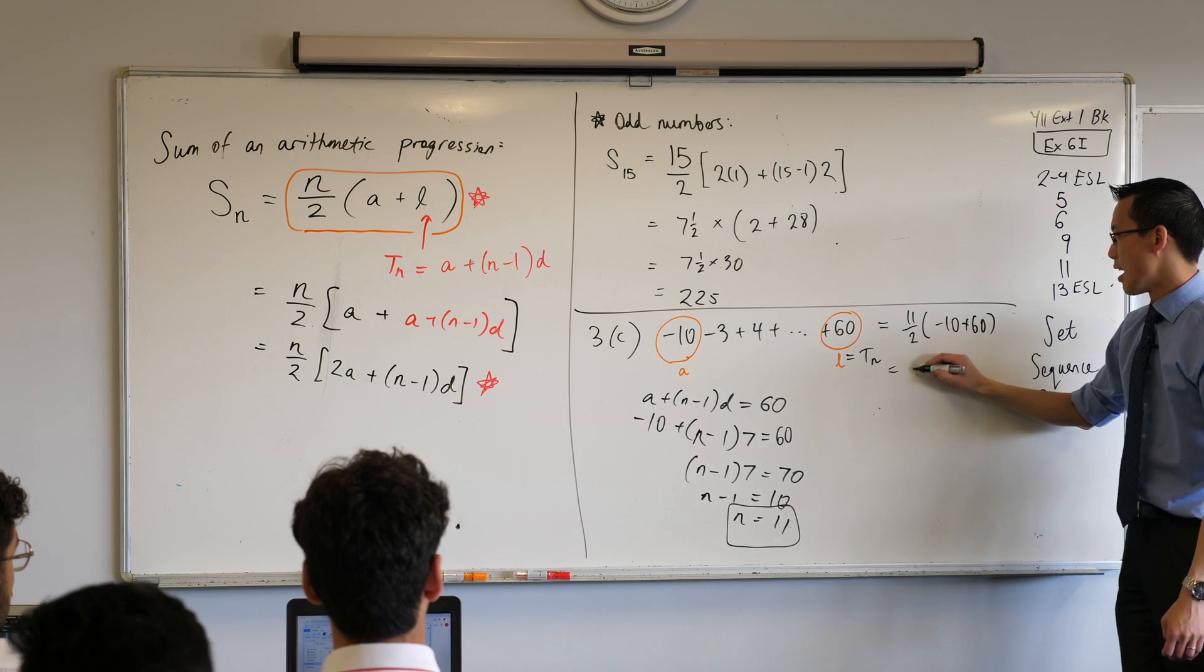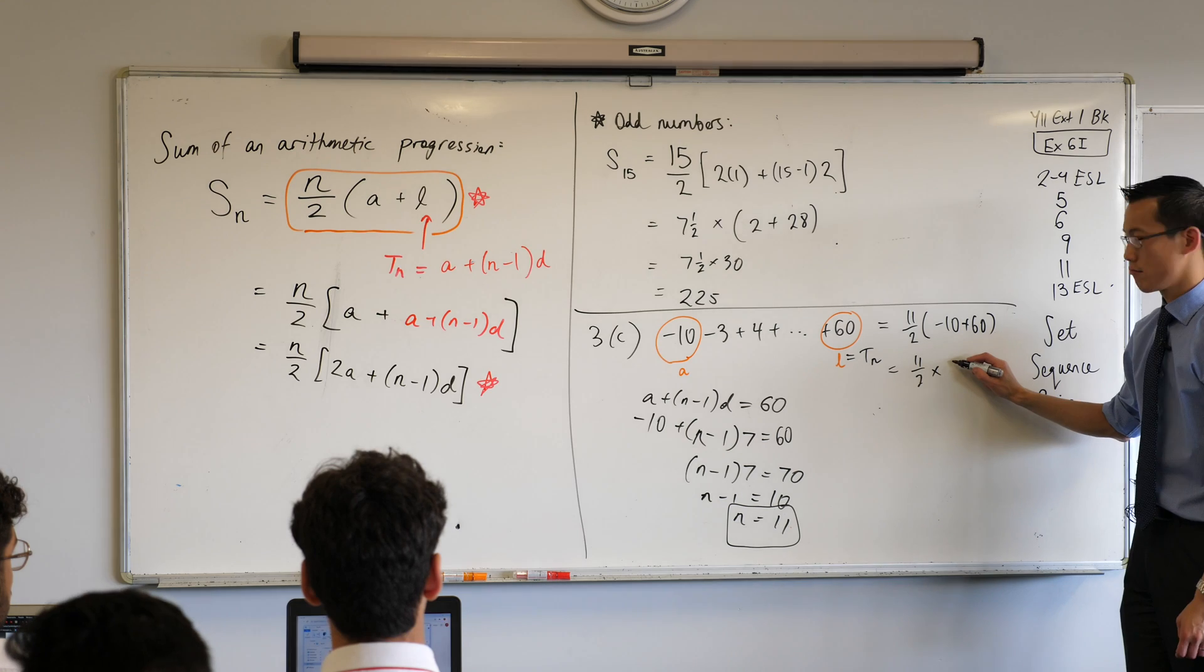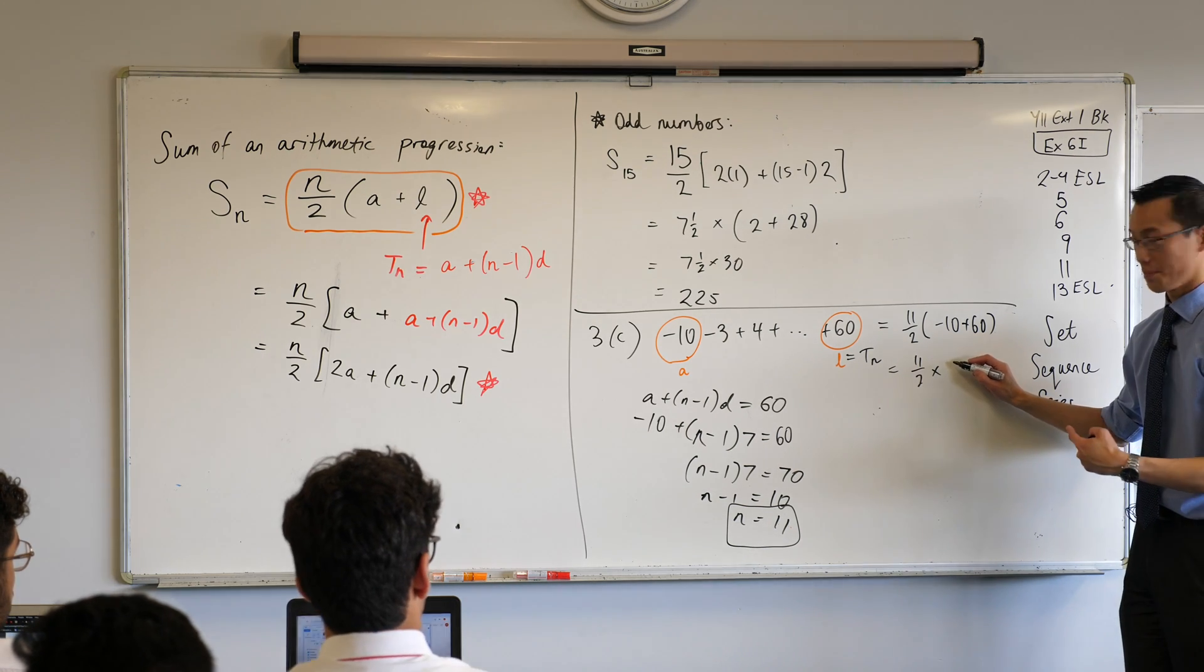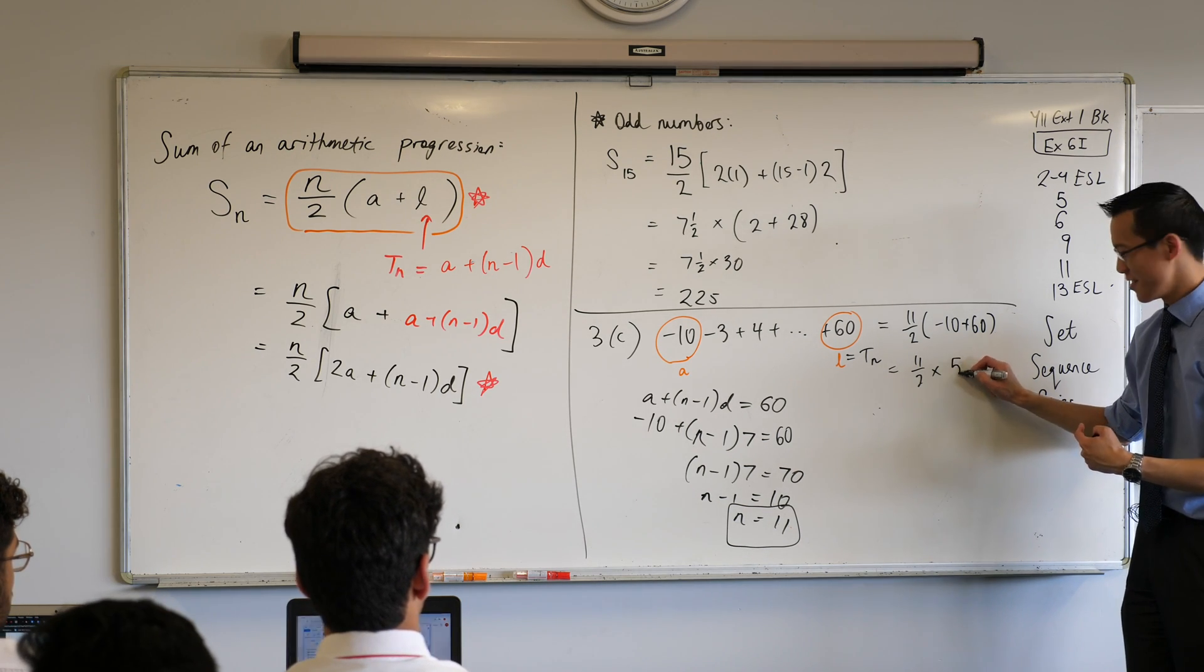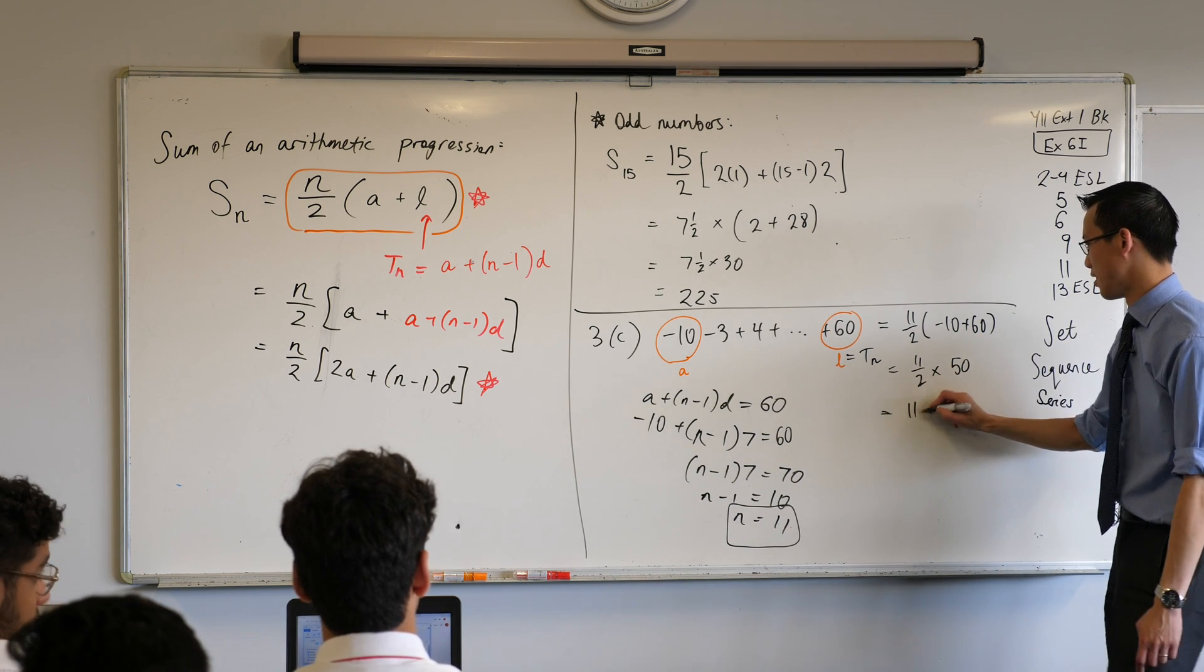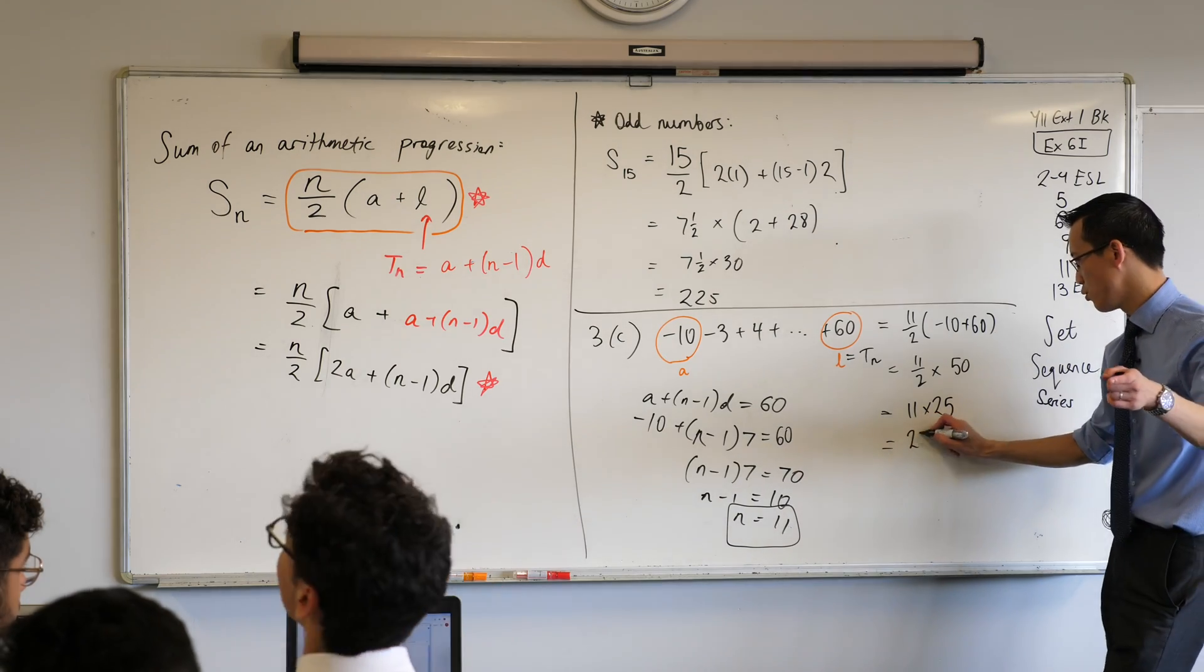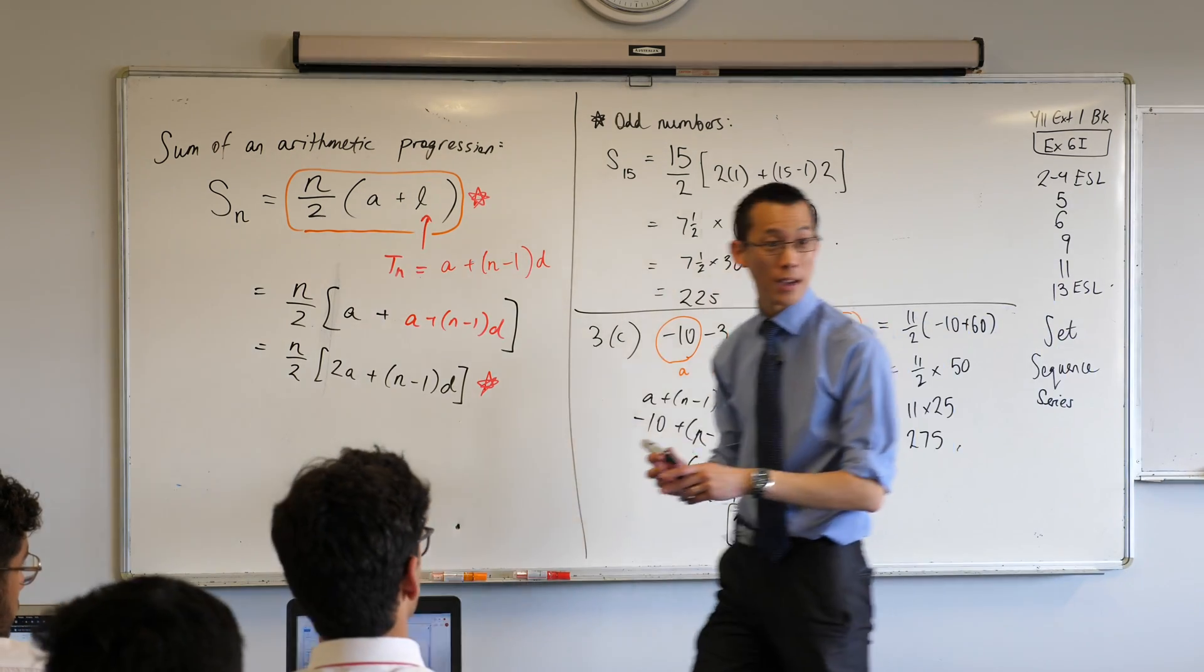Help me out. Thank you. Brains are still in gear. They're not overheating just yet. And then we can go from here. 11 lots of 25. That sounds like 250 plus 25 is 275. Nailed it.